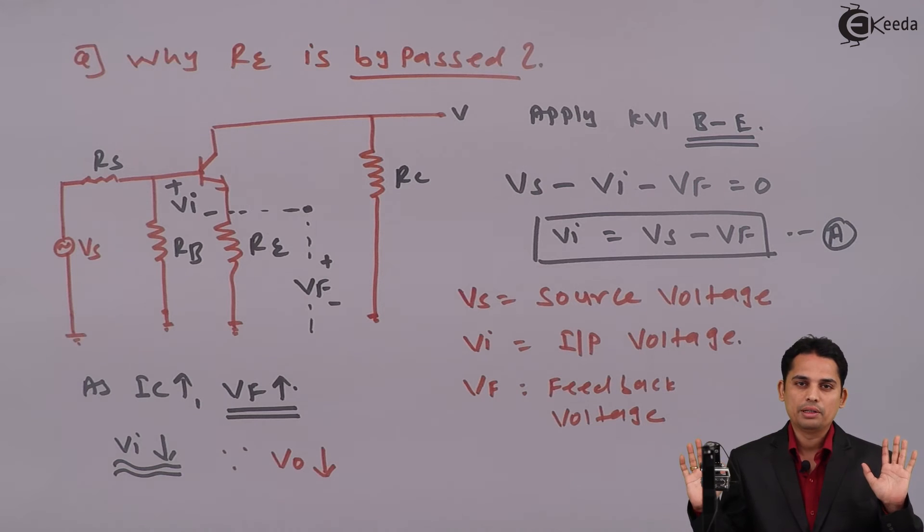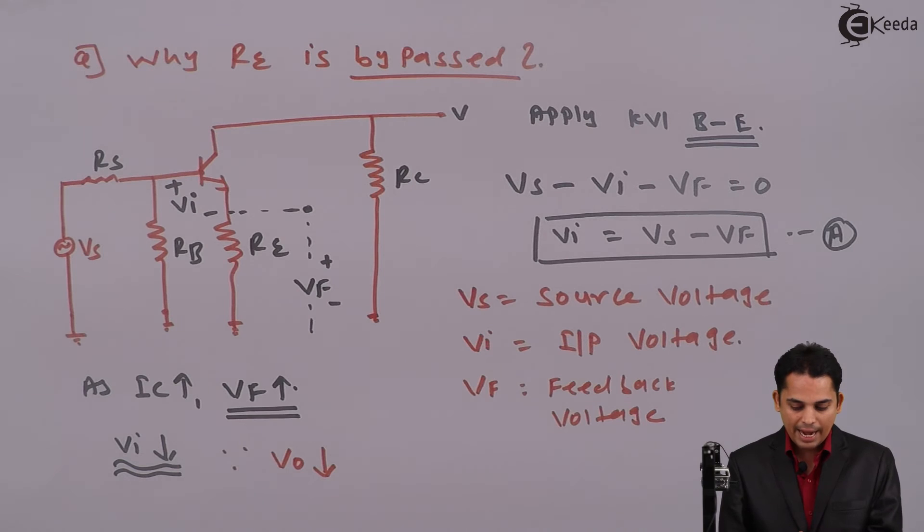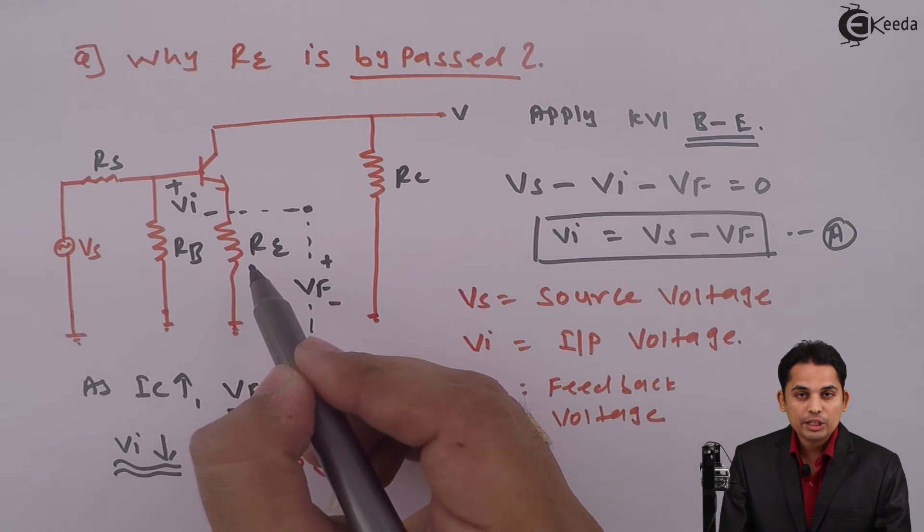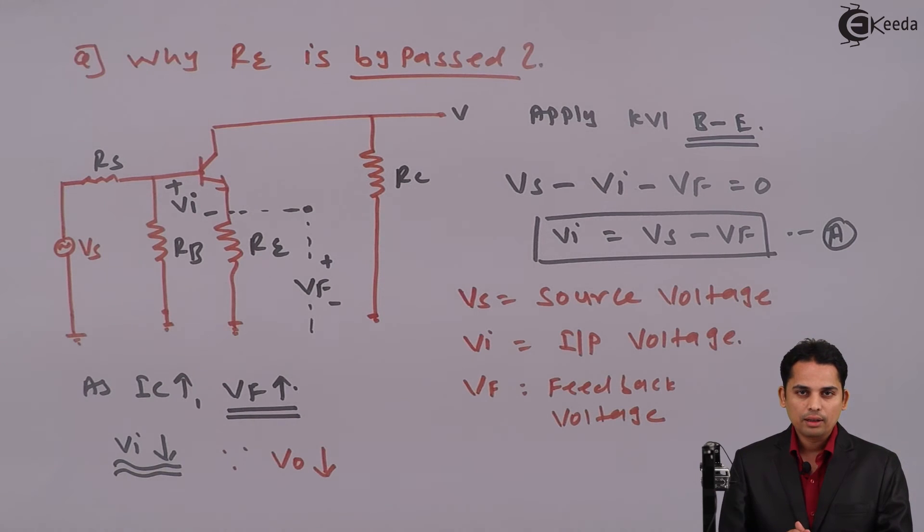This is a very problematic case. We required RE at the same time we do not require RE. Then how to deal with this? This is a very important question because RE is added in the circuit to provide DC stability. If we remove the RE, then DC stability will decrease. And if we have the RE, DC stability will increase but amplification will decrease. To avoid this situation, what we can do is we want RE during DC but we do not want RE during AC. As simple as that.